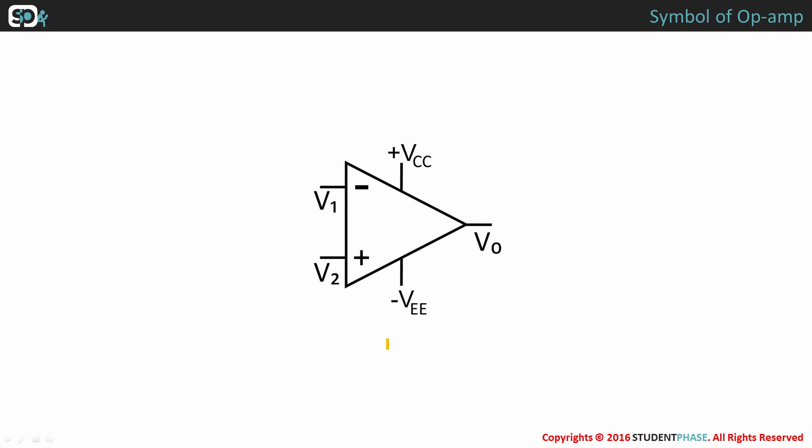The symbol of an op-amp along with its terminals is as shown. An op-amp is indicated by a triangle which points the direction of signal flow.